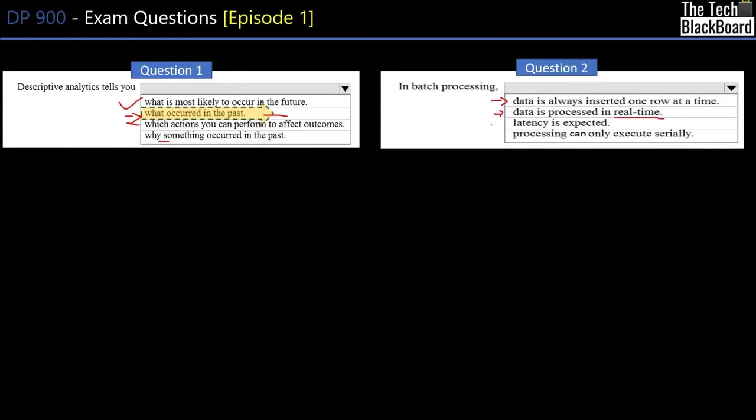The options are: data is always inserted one row at a time — not related to batch processing; data is processed in real-time — definitely not, that's real-time processing; latency is expected — this looks very close because processing data in big chunks takes time, so latency would be expected; processing can only execute serially — not correct because batch processing can run serially or in parallel. The correct option is 'latency is expected.'